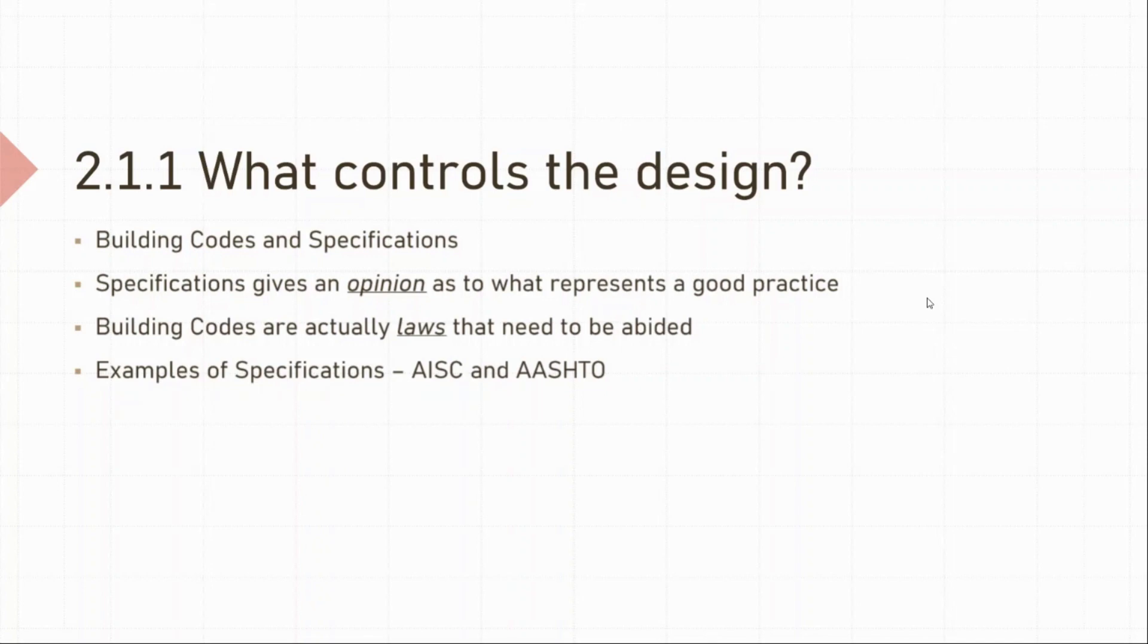Just for information, AASHTO stands for American Association of State Highways and Transportation Officials. So, you can say that AISC and AASHTO are not legally enforceable as they are just opinions made for good practice. But what makes AISC and AASHTO different is that they are adopted by building codes and hence becomes mandatory to practice. So, any specifications that are adopted by building codes are legally enforceable.